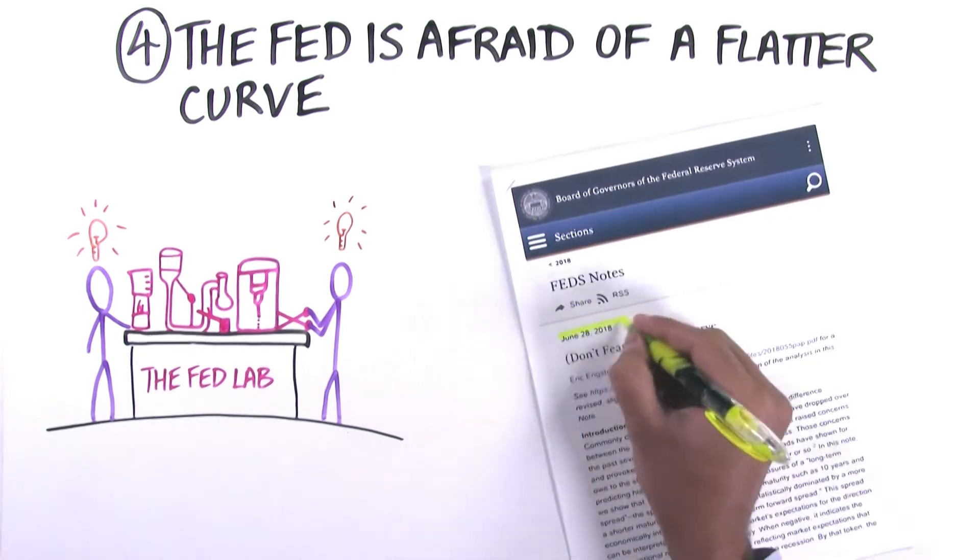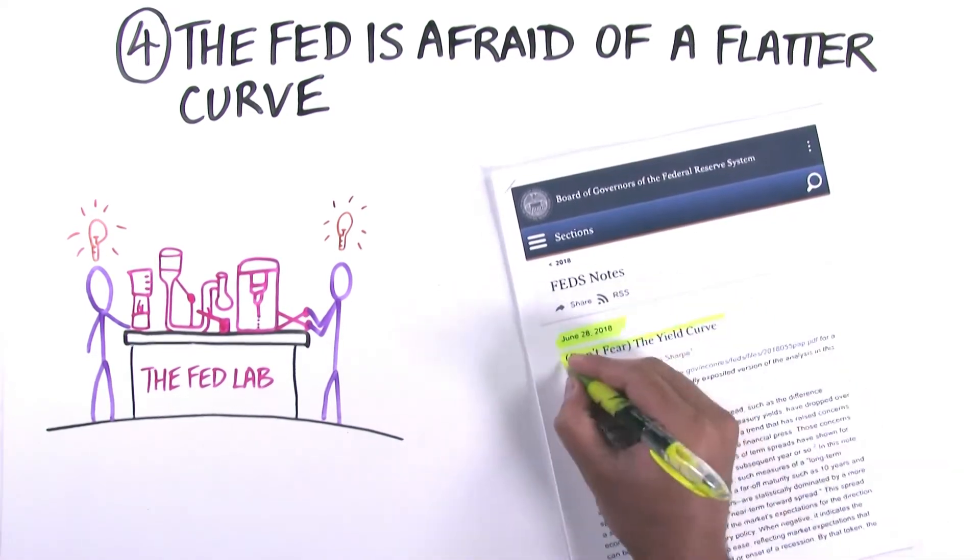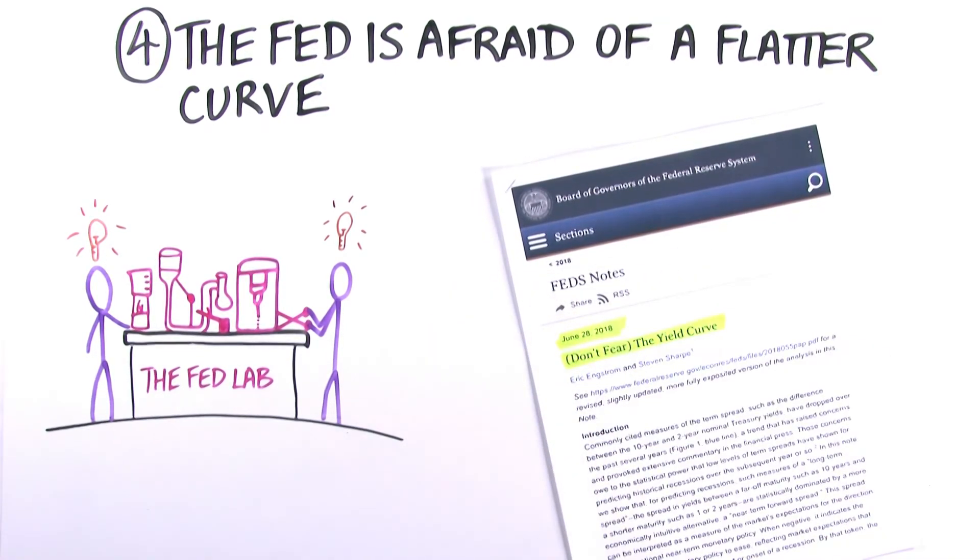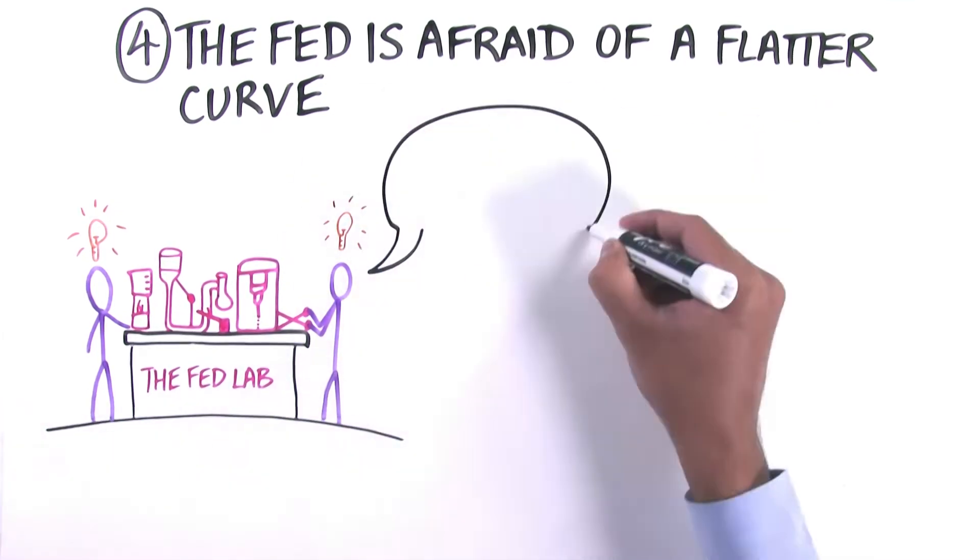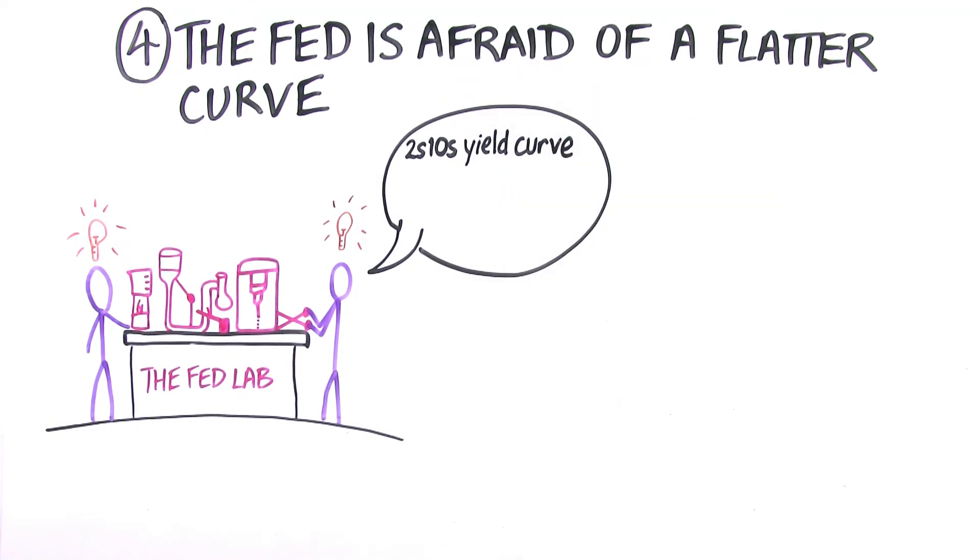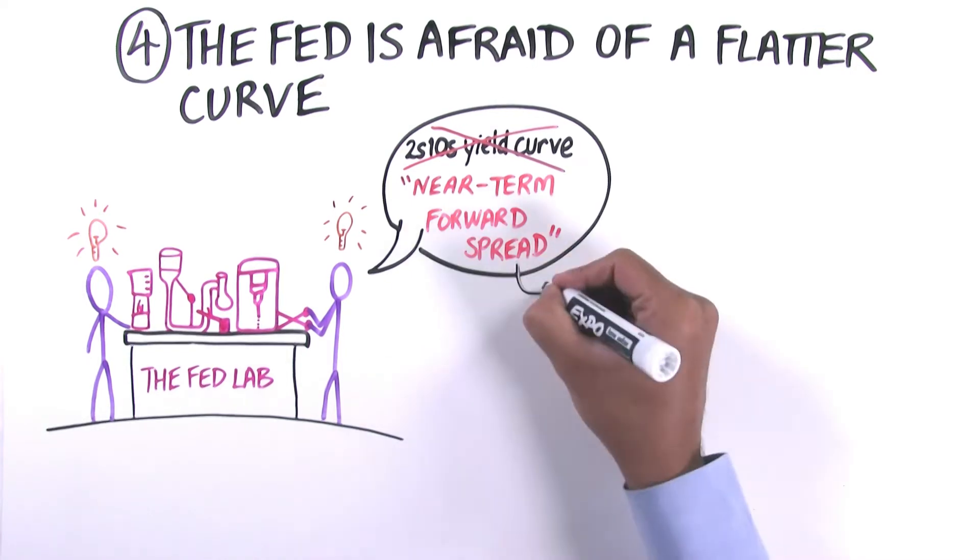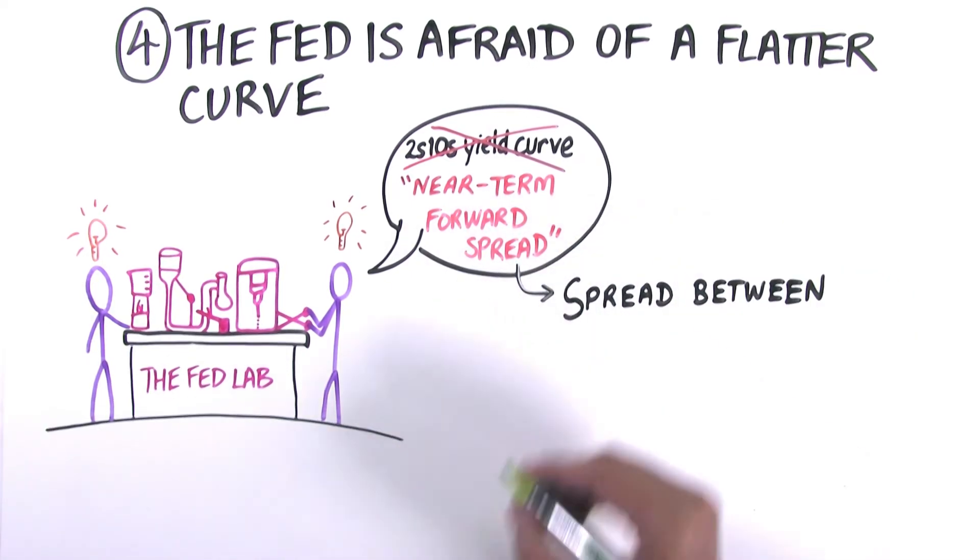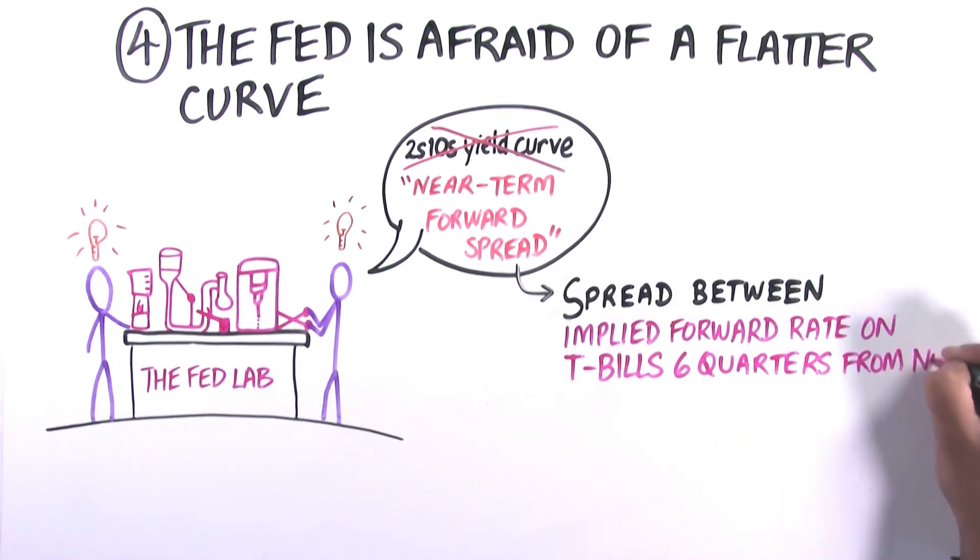On June 28th, 2018, two economists from the Federal Reserve published a post which said, quote, don't fear the yield curve. They went on to say that the 2s-10s yield curve, which is another measure of yield curve that's out there and popular among traders, has little predictive value. They also suggested that policymakers should focus on the near-term forward spread, which is the spread between implied forward rates on T-bills six quarters out and the current rate on a three-month T-bill.